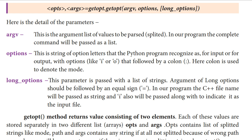That followed by a colon. For example, if we want to mention an output file, I have to mention o colon. For example, input file means I have to mention i colon. So like that we have to mention here. Colon is used to denote the mode.